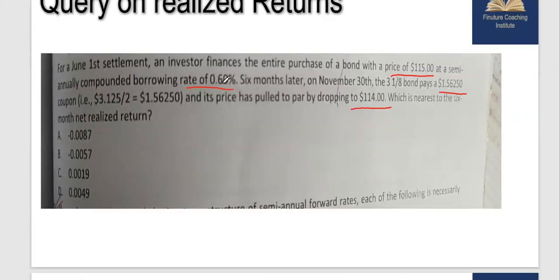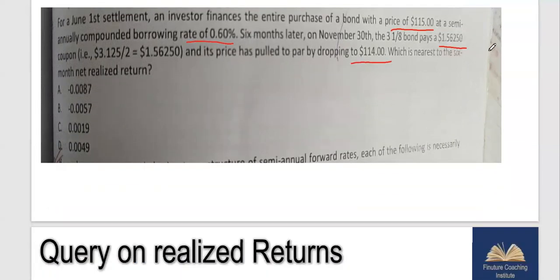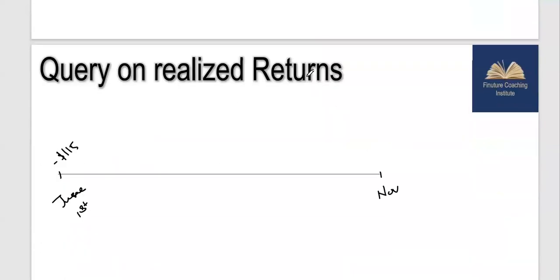0.6% is the annual rate, so for semi-annually it will be slightly lower. If I compounded it semi-annually, just for the sake of understanding, the semi-annual rate would be 0.3%. One of the outflows you have is negative 0.3% of the amount that you borrowed for initial investment. Then you have a dollar payment, so this is an outflow in November.